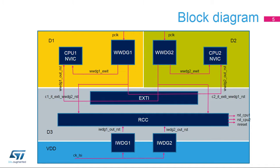Both watchdog peripherals, independent and window, allow detecting and resolving malfunctions due to software or hardware failures. The window watchdogs, WWDG1 and WWDG2 clocks, are derived from the APB clocks, and have a configurable time window that can be programmed to detect abnormally late or early application behavior. The WWDGs are best suited for monitoring software execution.